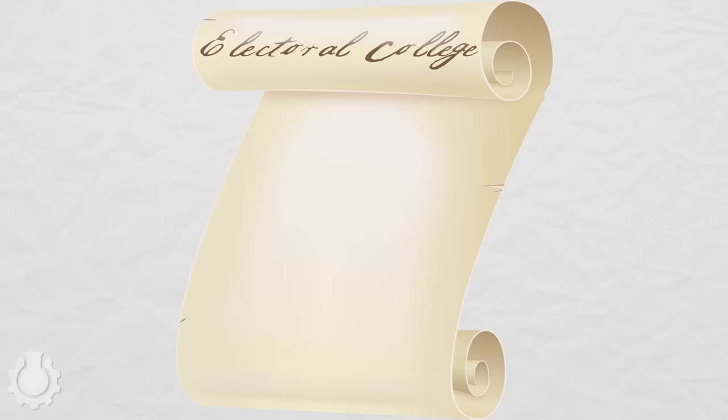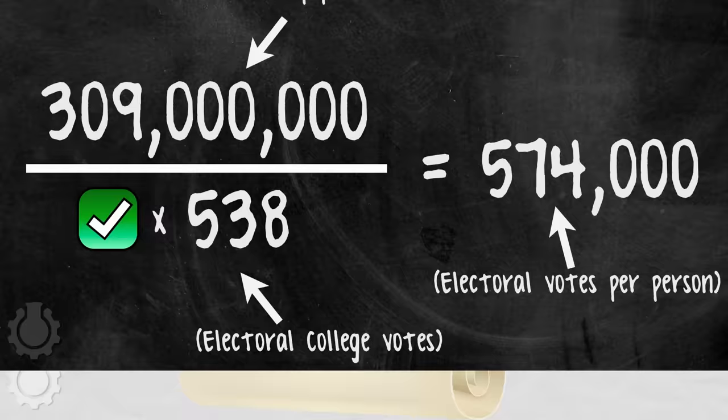The Electoral College is, essentially, the 538 votes that determine who wins the presidency. If these votes were split evenly across a population, every 574,000 people would be represented by one vote. But that's not what happens because the Electoral College doesn't give votes to people, only states, which has some unfair consequences.